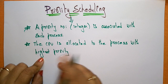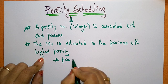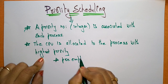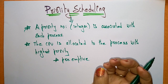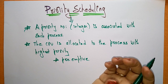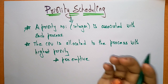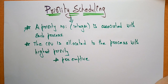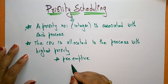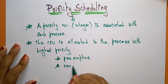In priority scheduling, it may follow preemptive scheduling. In preemptive mode, whenever a higher priority process arrives, the CPU stops the current execution and executes the higher priority process. That is called preemptive priority scheduling.